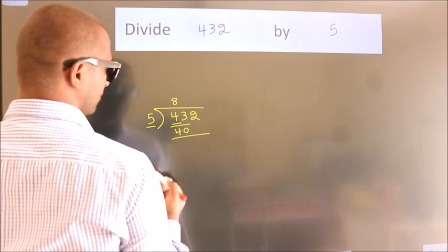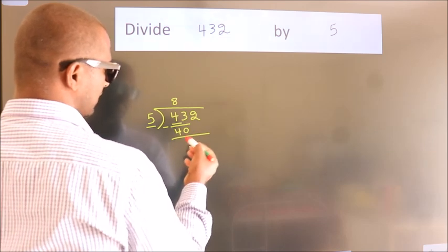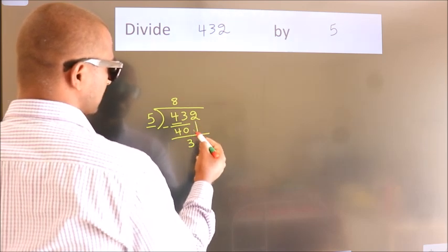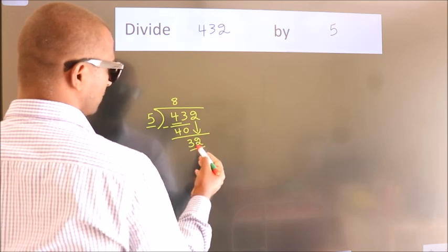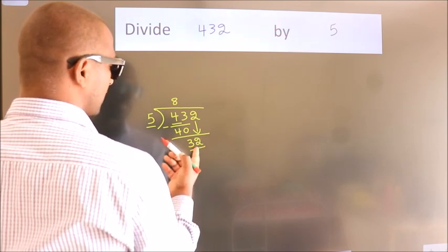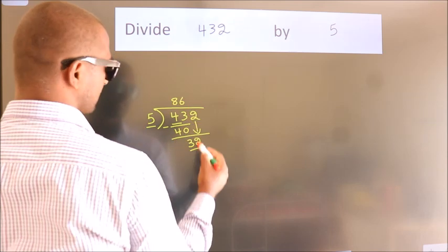Now we should subtract. We get 3. After this, bring down the beside number. So 2 down. So 32. A number close to 32 in the 5 table is 5 times 6 equals 30.